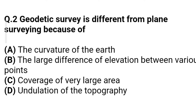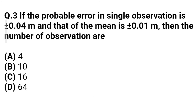Question 2: Geodetic surveying differs from plane surveying because of — Option A: the curvature of the earth. Option B: the large difference in elevation between various points. Option C: coverage of very large area. Option D: undulation of the topography. The correct answer is Option A — the curvature of the earth.